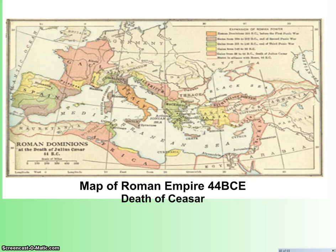Caesar is dead. He's been murdered — we've discussed that in class. What comes next? Well, it certainly doesn't set off a period of peace. We're looking at a map of the Roman Empire right around the death of Caesar. You can see it's a fairly sizable chunk of territory surrounding almost all of the Mediterranean Sea. It's been acquired in slow pieces, and it's going to take somebody who knows what they're doing to run it.